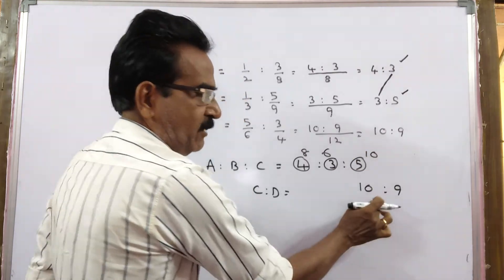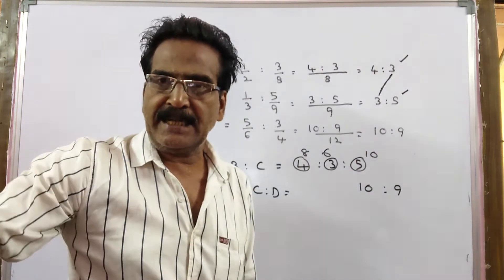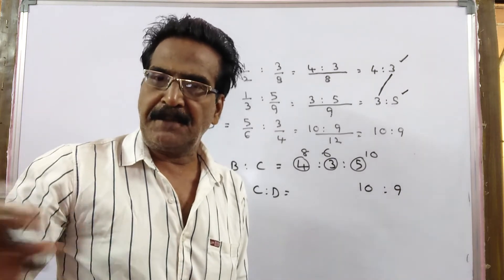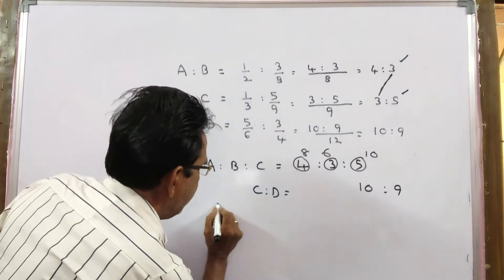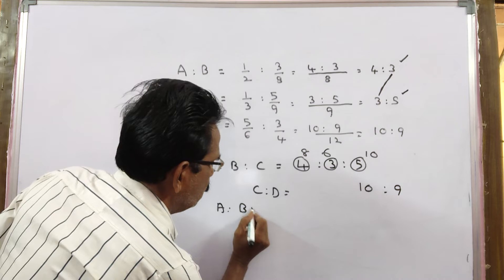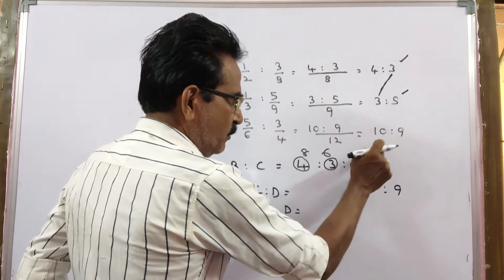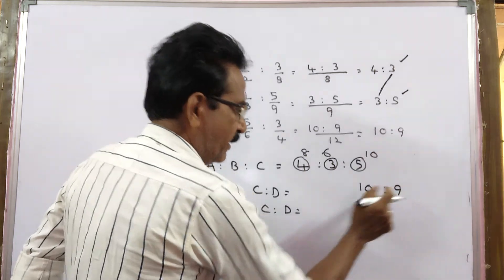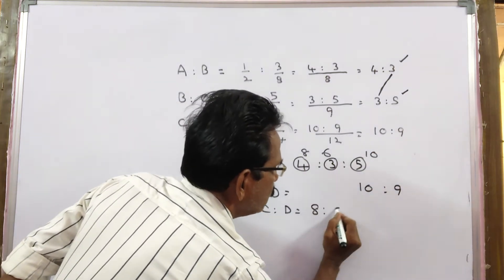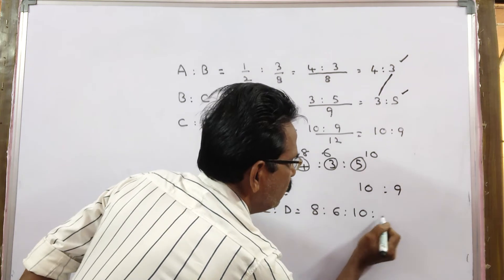So now C terms are equal, so now we can directly write the ratio of A is to B is to C is to D. A is to B is to C is to D is equal to 8 is to 6 is to 10 is to 9.